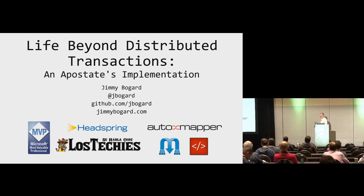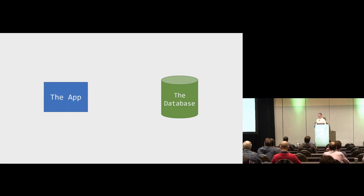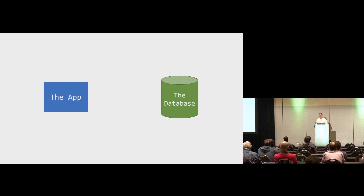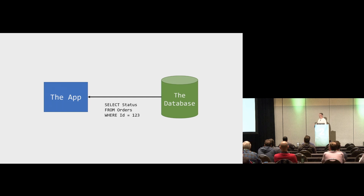So distributed transactions — I'm going to rewind to a simpler time when I didn't have to worry about them. In that simpler time, I just had an app and a database. When I want to do something with the database, it's just a single statement: update orders, update the status where ID equals whatever. Everything is good. When I get that information back, I should be able to read exactly what I just wrote.